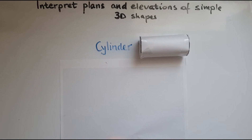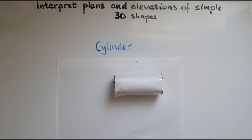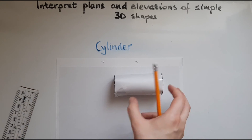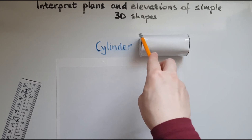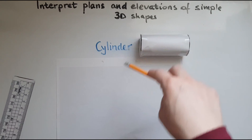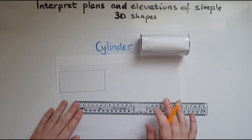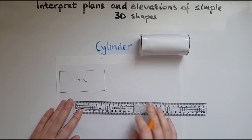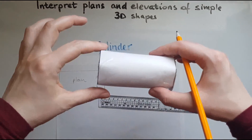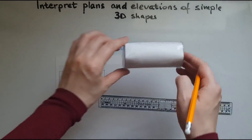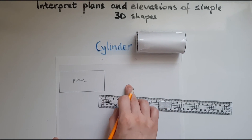Looking at the cylinder. All we can see from the top is a rectangle. I've measured the dimensions beforehand and it's about 10.5 centimetres long and about 5 centimetres wide. So I'll draw that — we've got the plan. In terms of the front elevation, it is identical to the plan, as you can see. So we'll draw an identical rectangle over here.